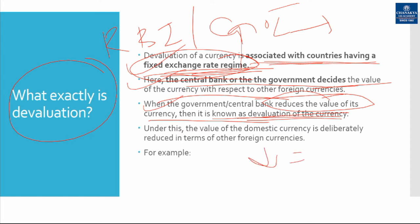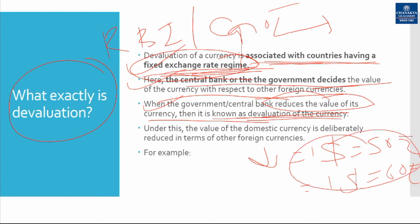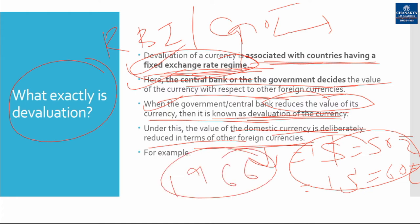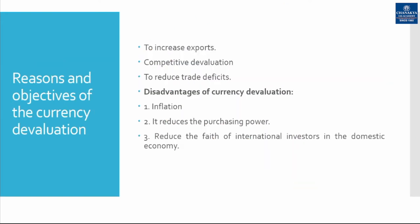Under devaluation, the value of domestic currency is deliberately reduced in terms of other foreign currencies through frequent efforts by the government and central bank. For example, in 1966, when India was following the fixed exchange rate regime, the Indian rupee was devalued by 36%. Now we will discuss the reasons and objectives of currency devaluation.